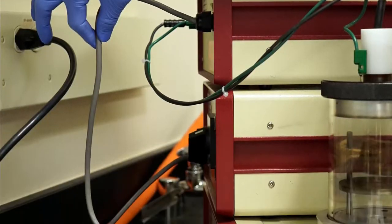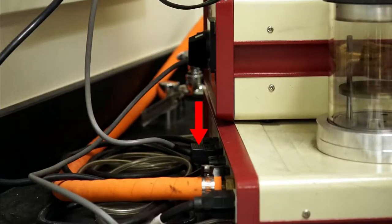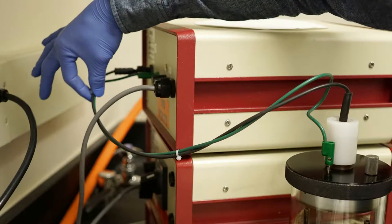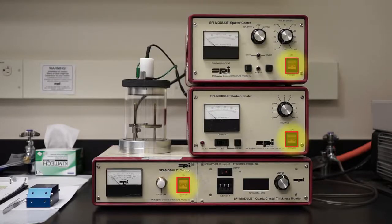Before using the device, check that the sputtering unit is plugged into the control unit and that the sputter leads are connected securely. Make sure that all the units are powered off. Check the gas leak valve is finger tight.